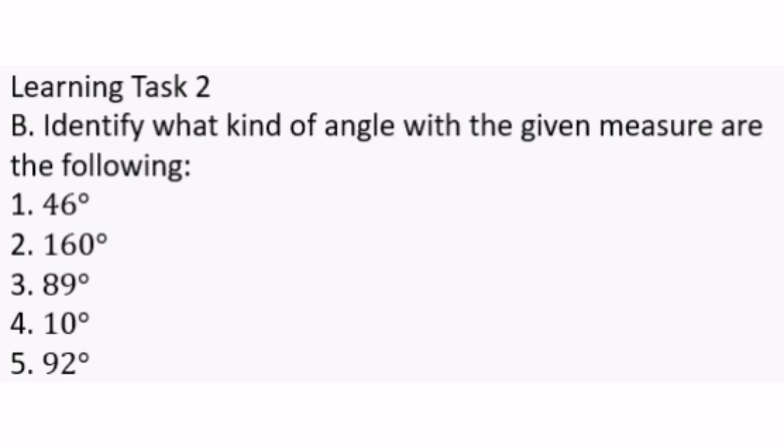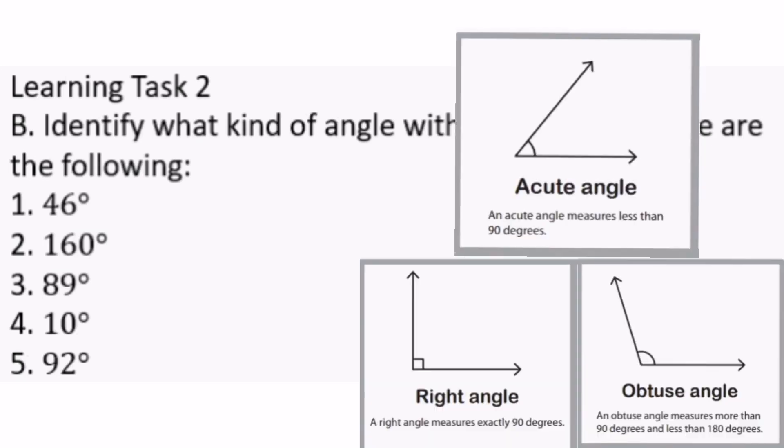Let's proceed to learning task 2 letter B. Identify what kind of angle with the given measure are the following. Number 1, 46 degrees is less than 90 degrees, so it is an acute angle.